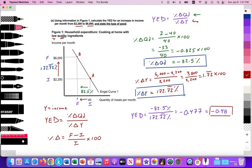YED equals negative 0.48. What does that mean? That's negative 0.48 over 1.